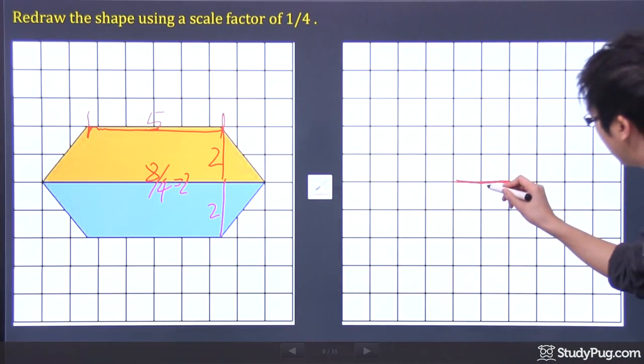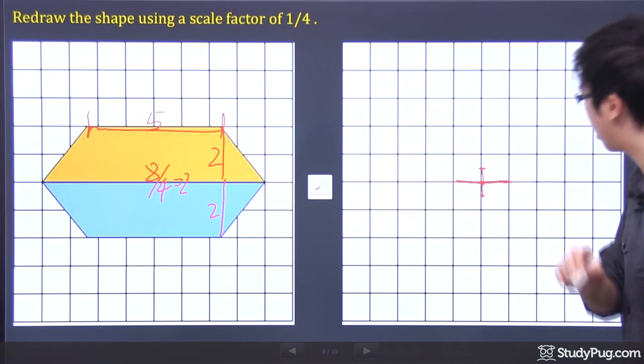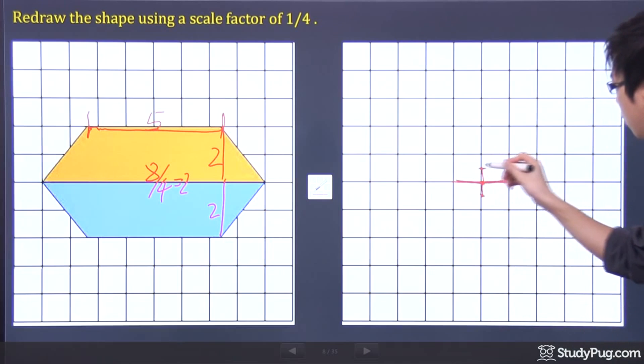So from the center line, I'm going to go down 0.5. About here, I'm going to stop, go up 0.5, and I'm going to stop because I'm going to figure out how long is here and how long is here.